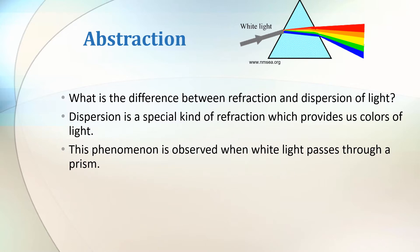This phenomenon is observed when white light passes through a prism. When white light enters a prism, the different colors of light bend differently, causing them to separate from each other.